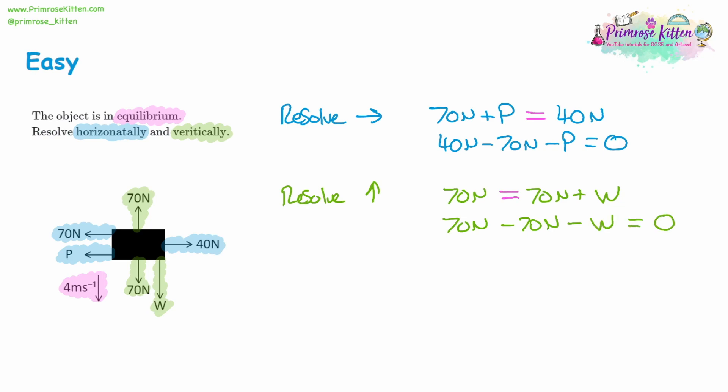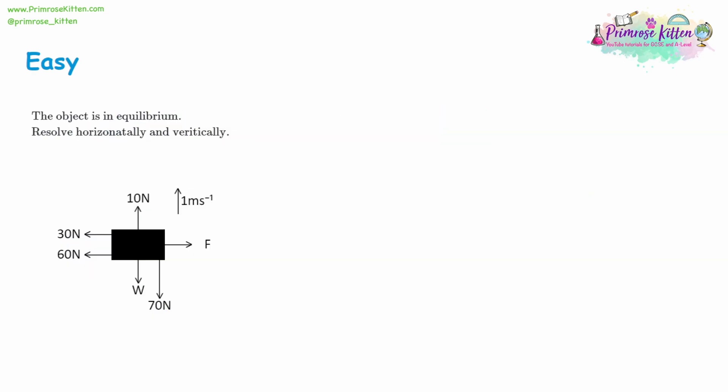If you actually work this out, 70 newtons take away 70 newtons is zero. That means the force W must be zero, which means this force isn't active at the moment.